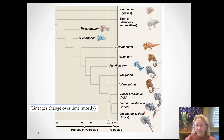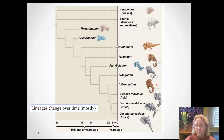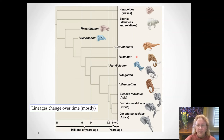Looking at this lineage, the little crosses mark extinct species. The ones that went extinct most recently — mammoths and mastodons — only went extinct at the end of the last ice age, about 10,000 years ago. Coincidentally, that's when humans arrived in North America, which is when mammoths went extinct. We can see some interesting changes during the evolution of elephants over this lineage.